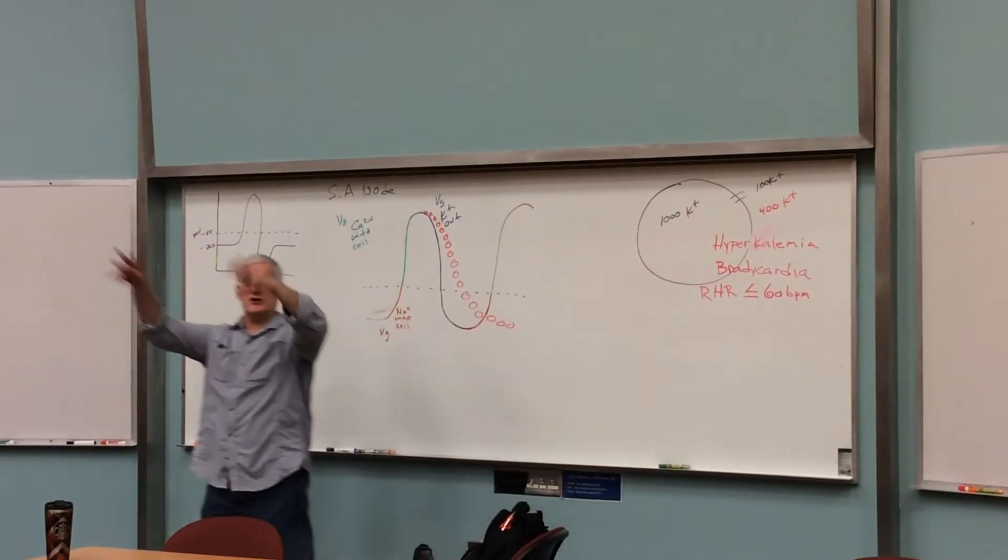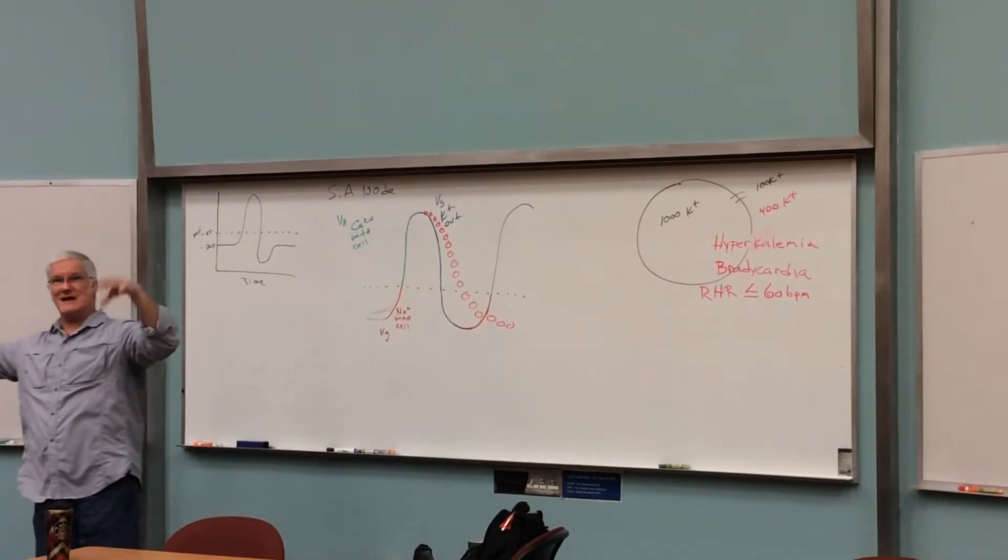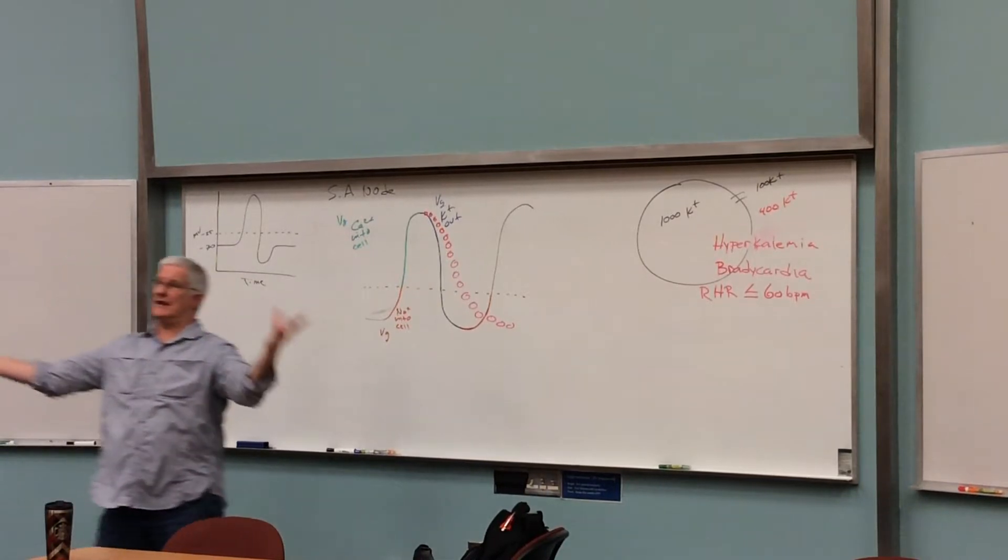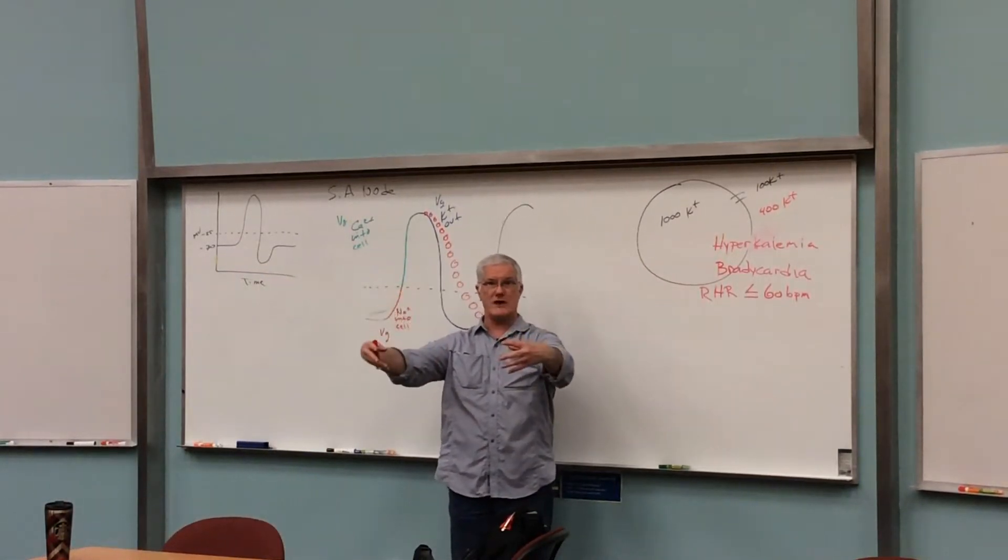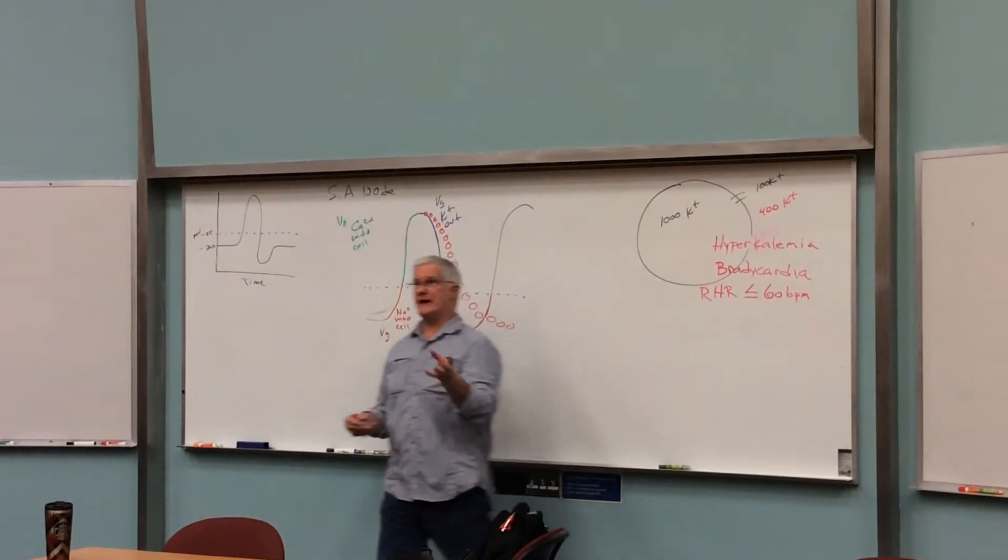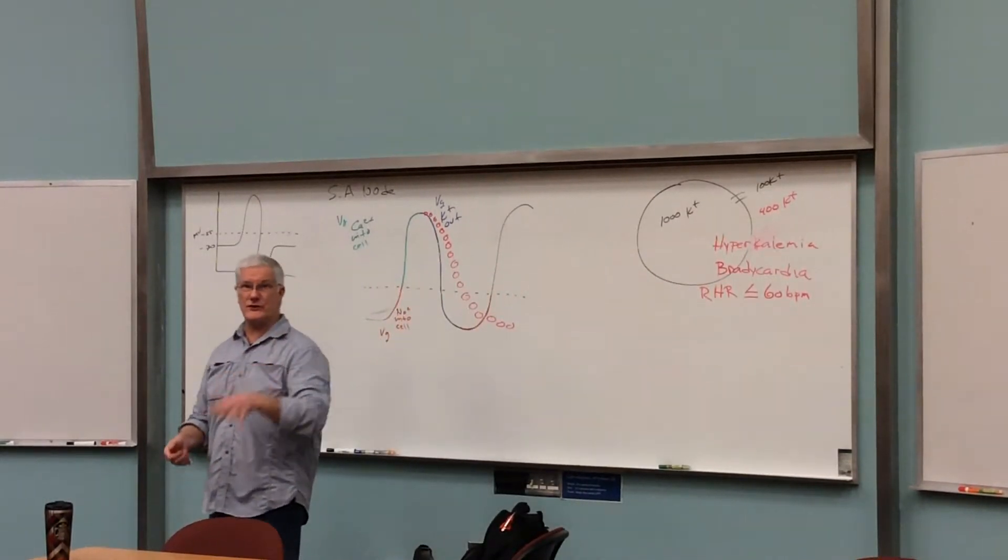But for the average person, if the average heart rate is 72 beats a minute, then you take it and you're down to around 60, then we can classify you as having bradycardia. Now, for some reason, your heartbeat is slower than it normally is for you. Why?